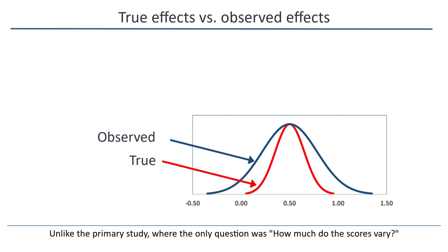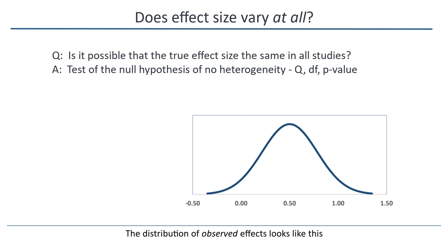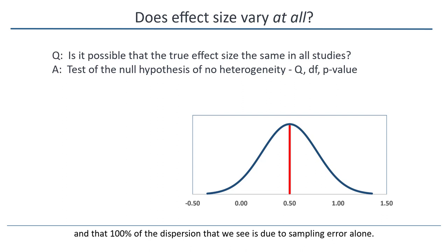Unlike the primary study, where the only question was how much did the scores vary, now there are three questions that we can ask. I can ask: is it possible that the true effect size is the same in all studies? The observed effects obviously vary from study to study. But we're asking about the true effects — specifically, is it possible that the drug has precisely the same impact in all studies, and that 100% of the dispersion that we see is due to sampling error alone?